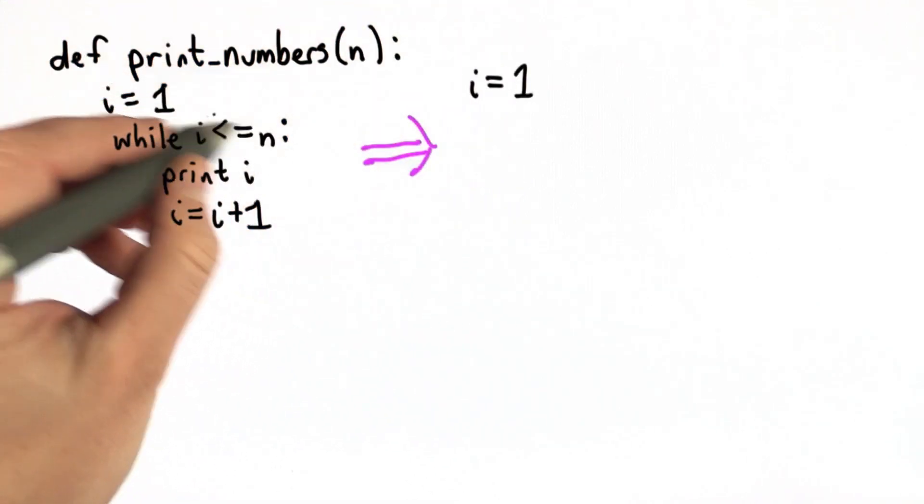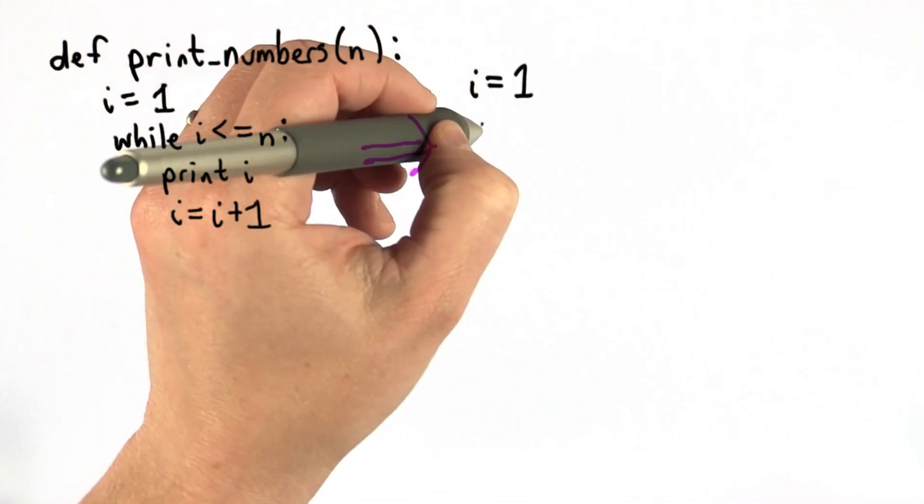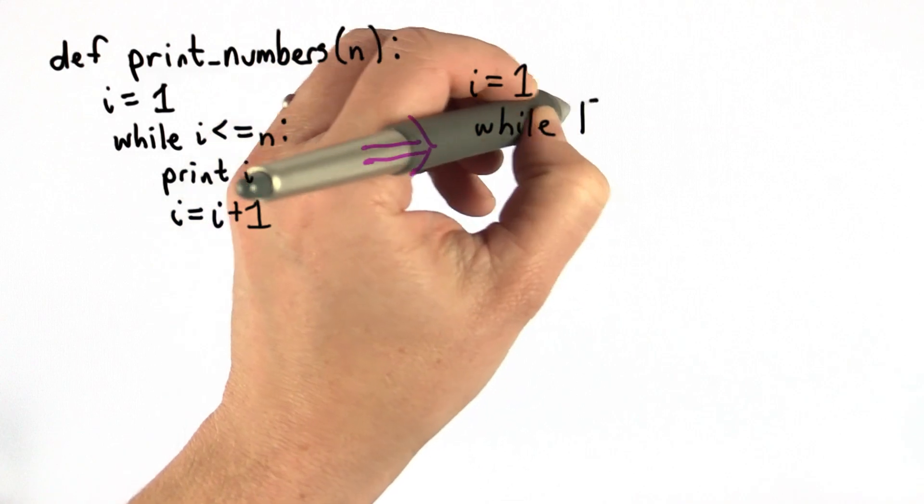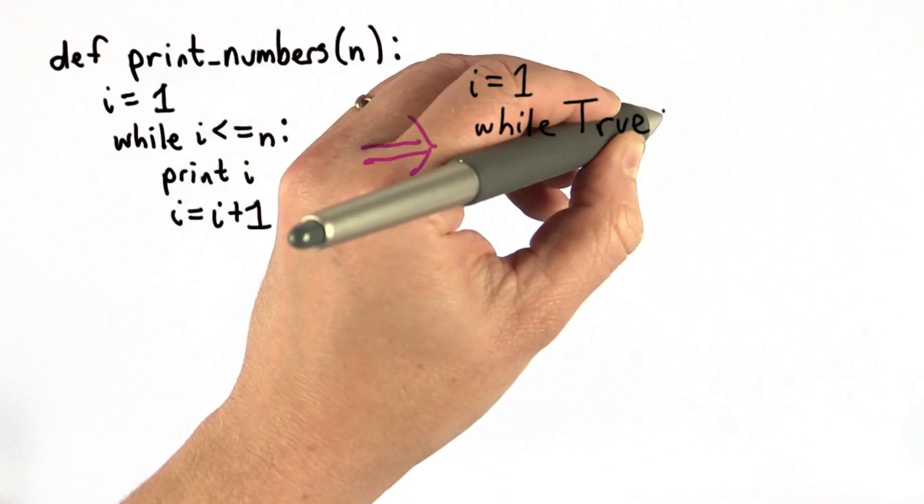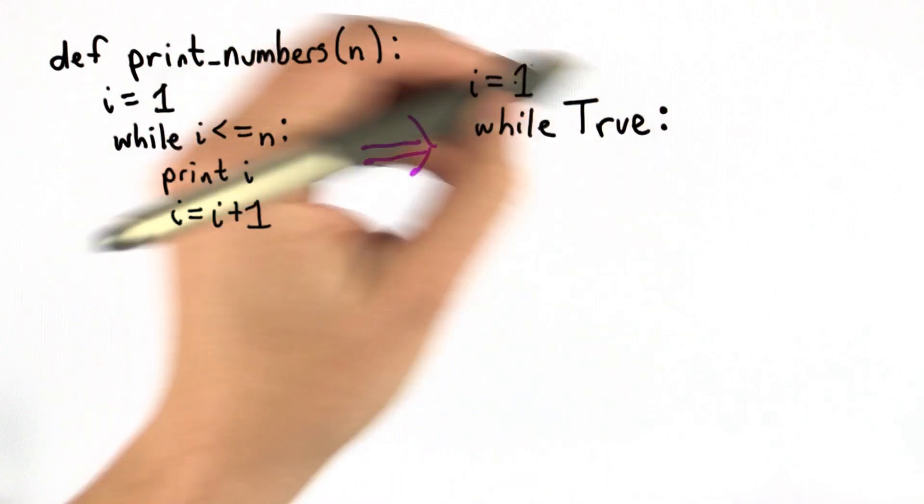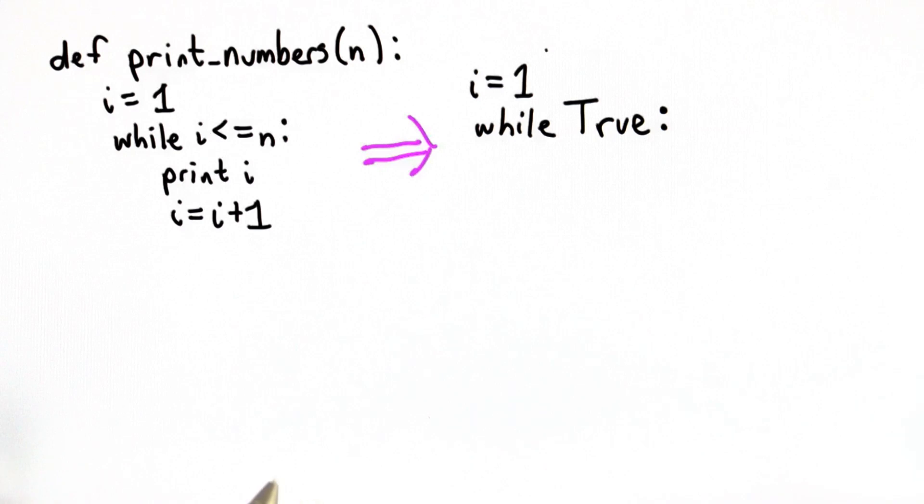So now instead of having the while test stop the loop, we'll make the while test true. True will never become false. That means if we didn't have a break, the loop would keep going forever. But we're going to add a break.